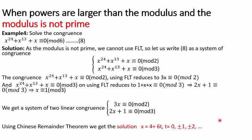What happens when the modulus is not prime? We can still solve it. When the modulus is composite, we split it. In this case the modulus is 6, which is composite. Since we cannot directly use Fermat's Little Theorem, we write the congruence as a system of congruences by factoring 6 = 2 × 3.